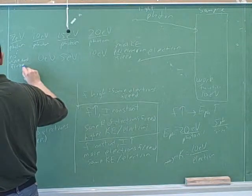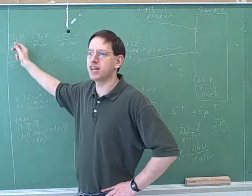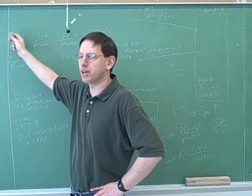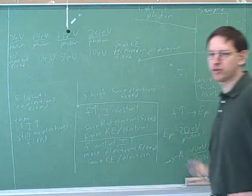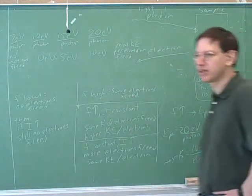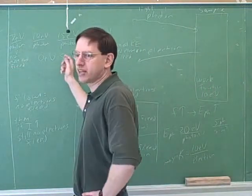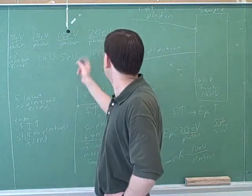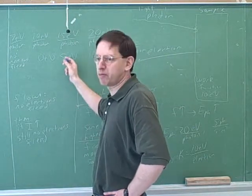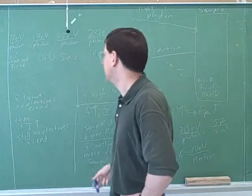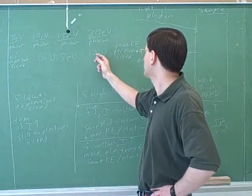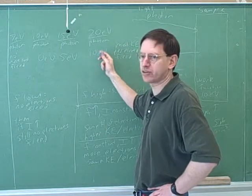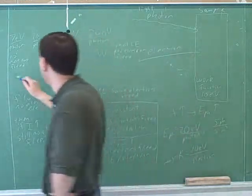No electrons freed, no matter what you do. The intensity doesn't matter because the intensity would just change the number of seven electron volt photons and none of them would be above the threshold. Over here on the other hand, if we increase the intensity over here that would give us more electrons freed but they would still have a maximum energy of five electron volts. And if we increase the intensity here that would give us more electrons freed but they would still have a maximum energy of kinetic energy of 10 electron volts.